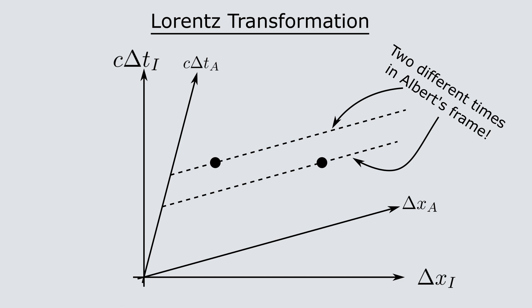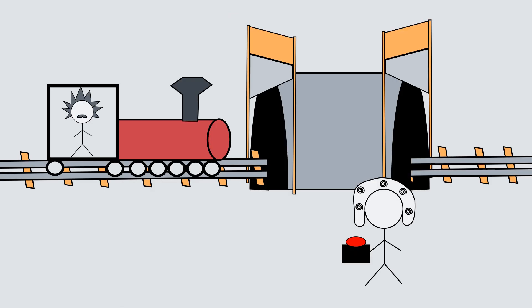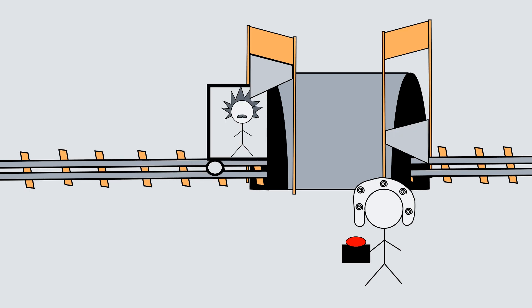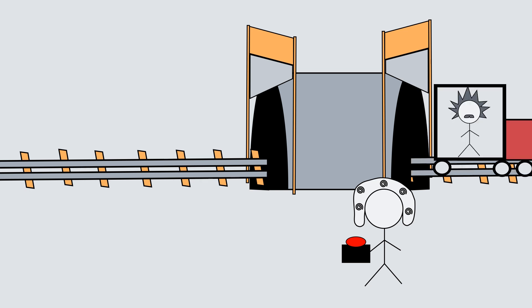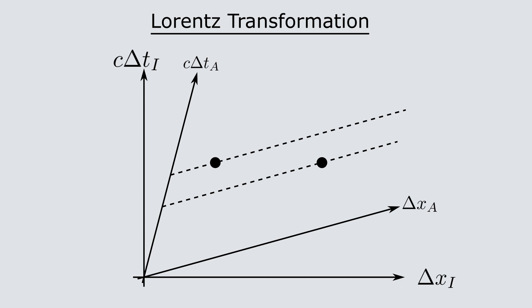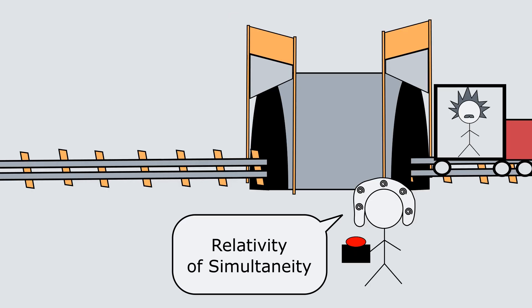In fact, the guillotine at the exit of the tunnel falls before the one at the entrance, so the train can make it through without a problem. We've successfully resolved the paradox and found out an interesting new feature of special relativity. Two events, which occur at the same time according to one observer, can occur at two different times to another observer. This result is known as the relativity of simultaneity.